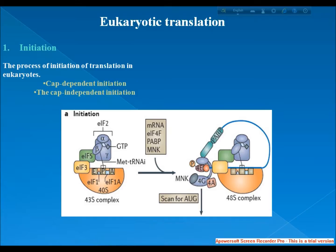The first step is initiation. The process of initiation of translation in eukaryotes is done by two methods: cap-dependent initiation and cap-independent initiation. First, I will describe cap-dependent initiation.